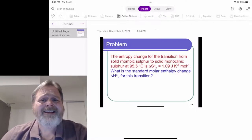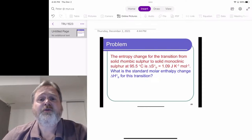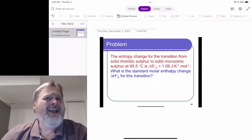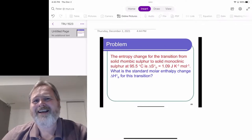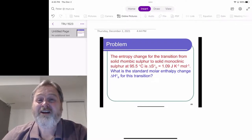In this case, the entropy change is for the transition going from solid rhombic sulfur to solid monoclinic sulfur. In other words, how the molecules inside the solid are slightly rearranged to form a new crystal structure.